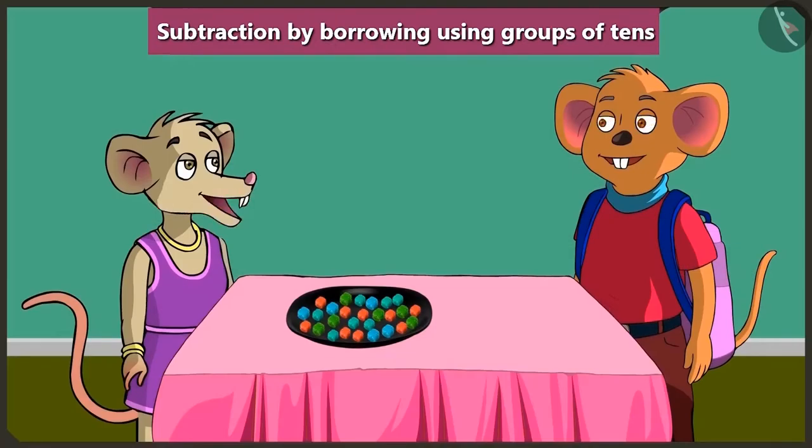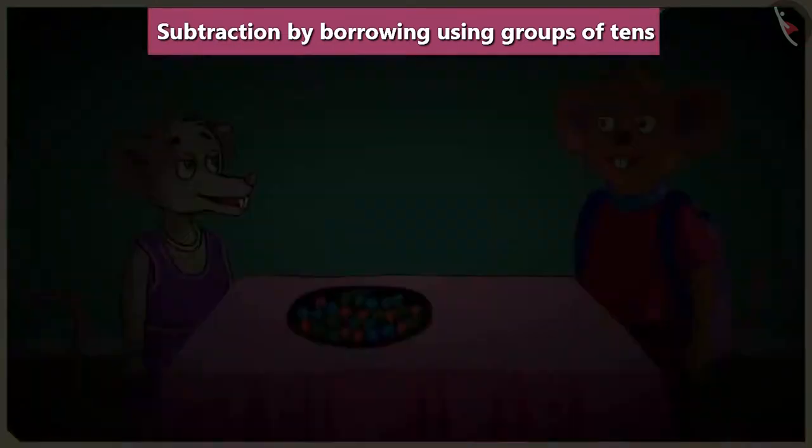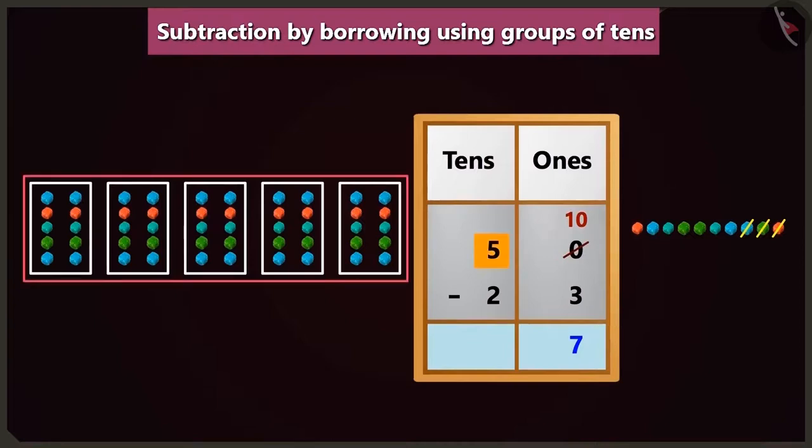Yes. Now I have understood it well. Thank you so much, Choo Choo. Look, Choo Choo. In subtraction, whenever we borrow ten from a digit, we have to reduce that digit by a ten.